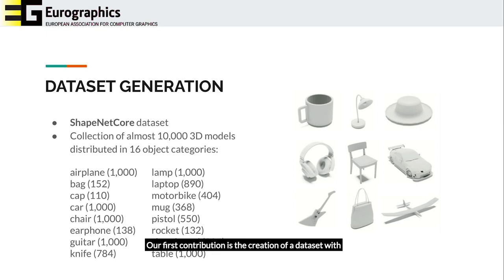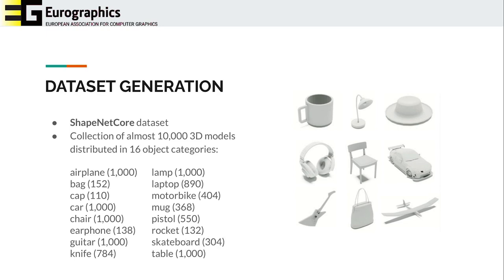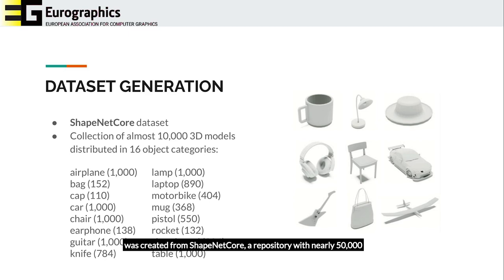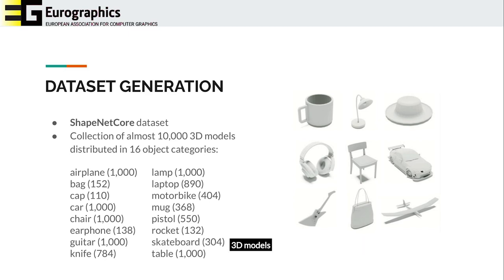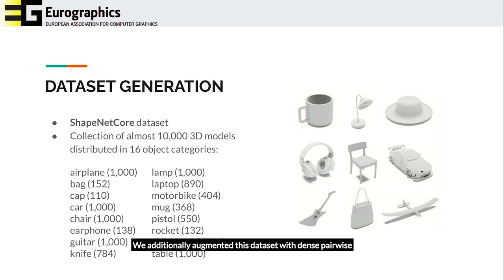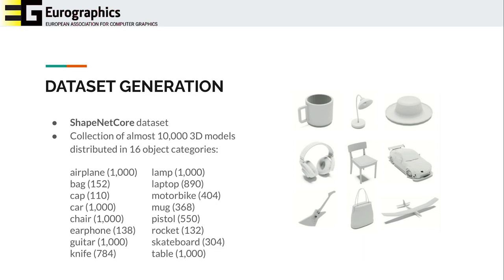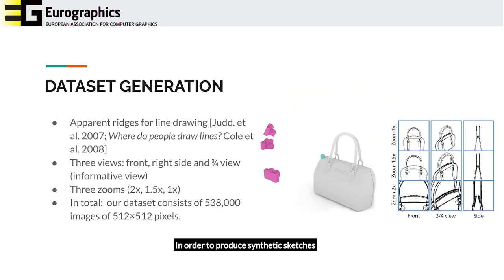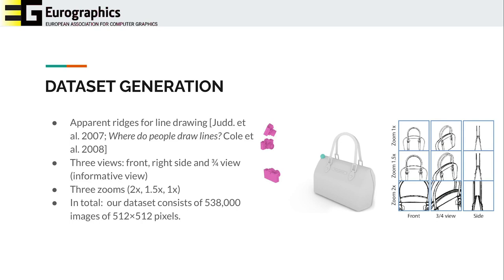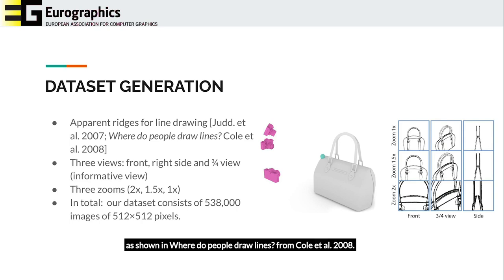Our first contribution is the creation of a dataset with over 500,000 synthetic sketches. This vast image dataset was created from ShapeNet Core, a repository with nearly 50,000 unique 3D models, from which we selected 10,000 distributed among 16 object categories. We additionally augmented this dataset with dense pairwise correspondences computed with the method proposed in Huang 2018. In order to produce synthetic sketches, we relied on a well-known apparent ridges non-photorealistic rendering algorithm, a good approximation to artists' lines as shown in "Where Do People Draw Lines?" from Cole et al. 2008.